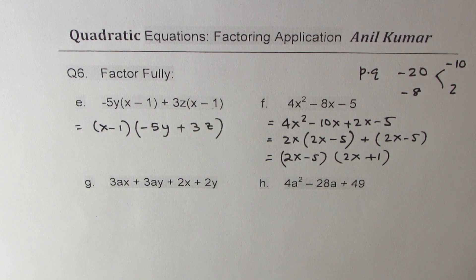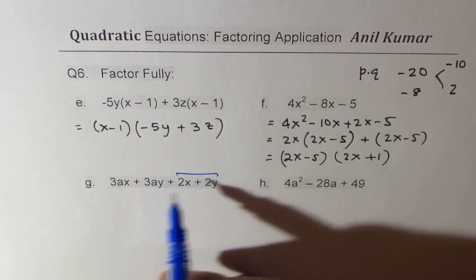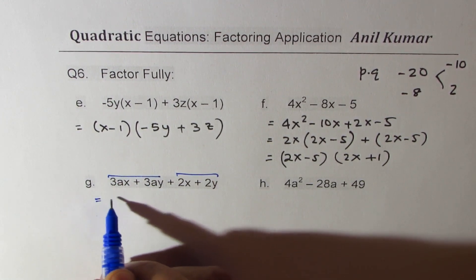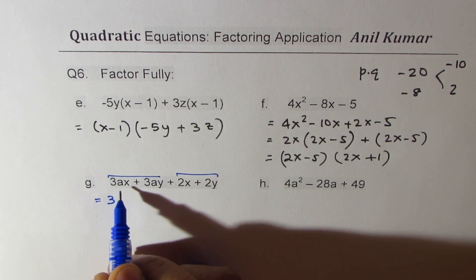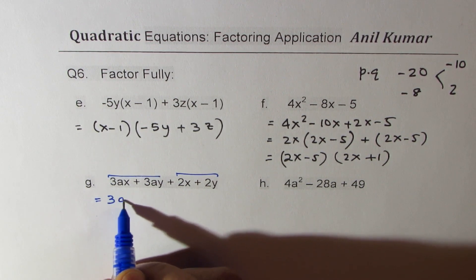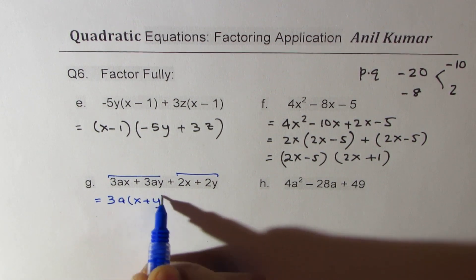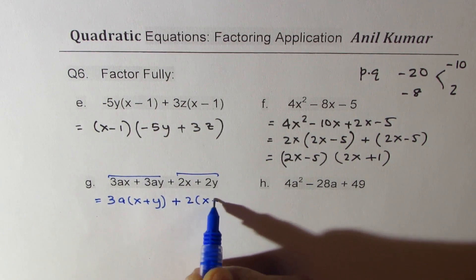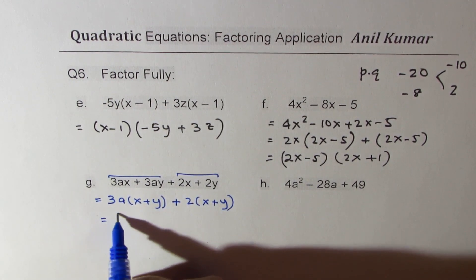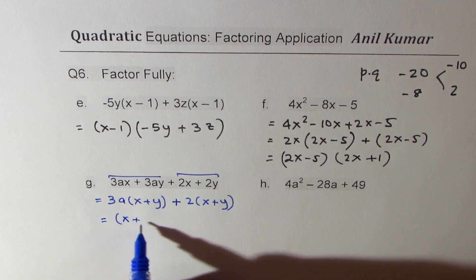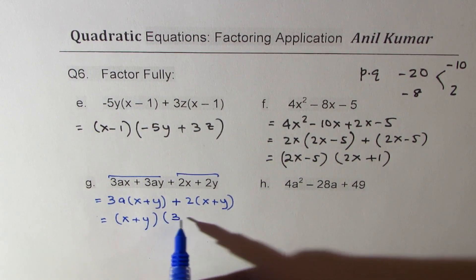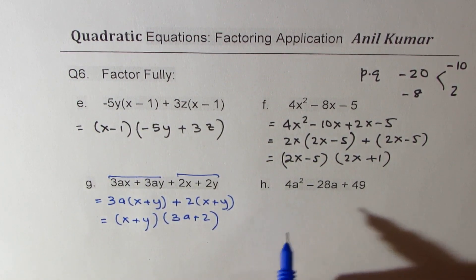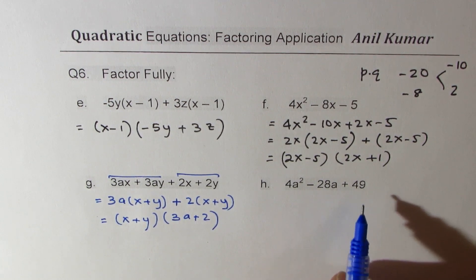Now we use group factoring — we group the terms and then factor. We have 3 and a common in one group giving (x + y), and 2 common in another group also giving (x + y). So we can write it as (x + y)(3a + 2).